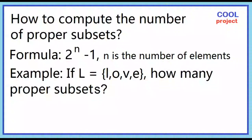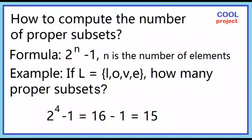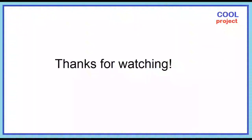Example: If set L is the set of letters in the word 'love,' how many proper subsets does it have? The number of elements is 4. Two to the power of 4 minus 1 is 16 minus 1, which equals 15. Thanks for watching.